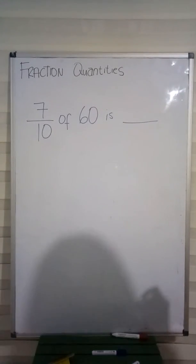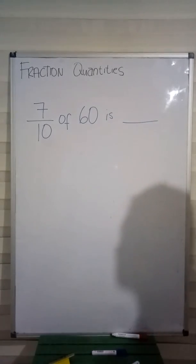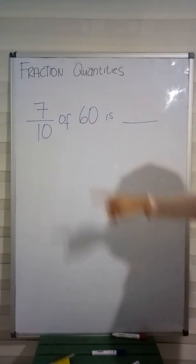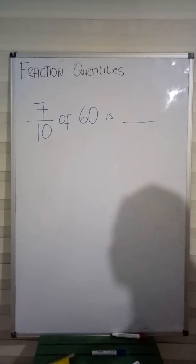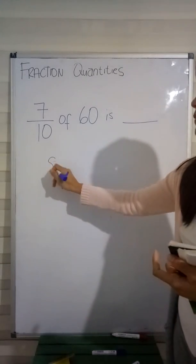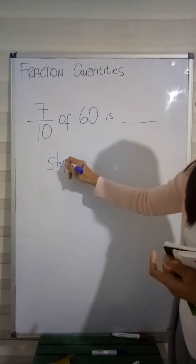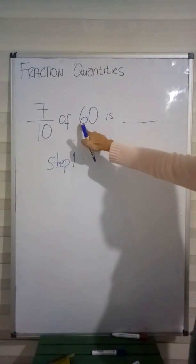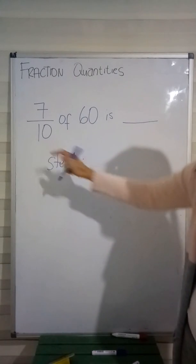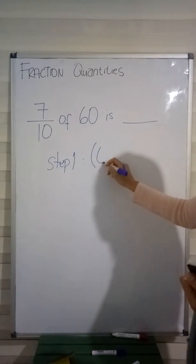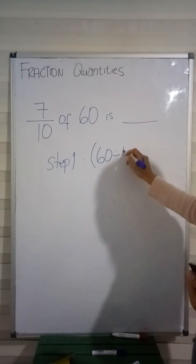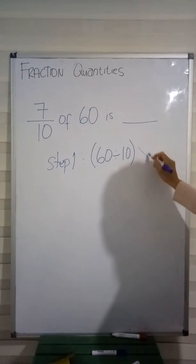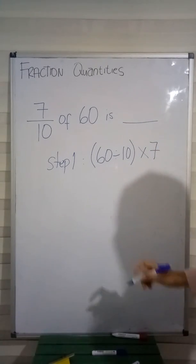Here's another example where our numerator is not 1. We have the fraction 7 tenths, and we need to get 7 tenths of 60. What is 7 tenths of 60? We do Step 1 again: divide our number — in this case 60 — by our denominator. Open parenthesis: 60 divided by 10. And then we multiply by 7, so we write times 7 outside the parenthesis.